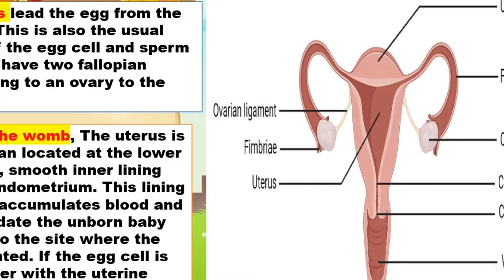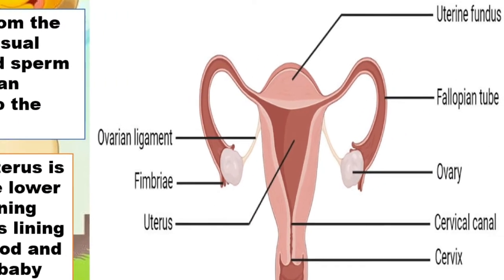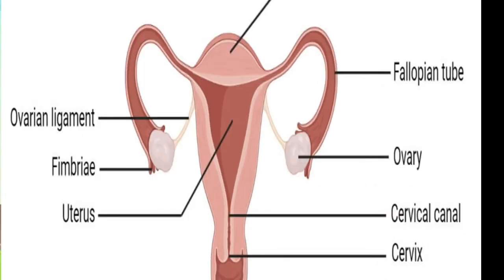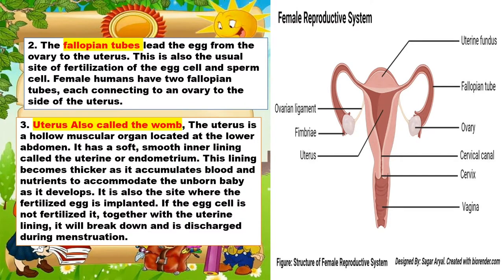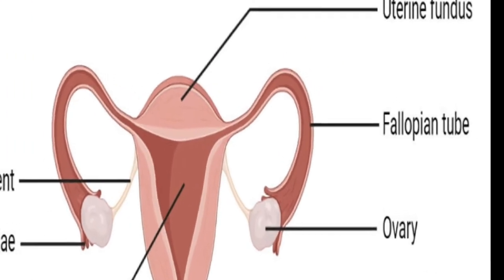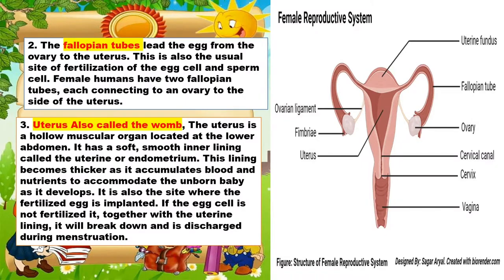The second one is the fallopian tubes. The fallopian tubes lead the egg from the ovary to the uterus. This is also the usual site of fertilization of the egg cell and sperm cell — meaning, this is where the meeting of the egg cell and sperm cell takes place. Female humans have two fallopian tubes, each connecting an ovary to the side of the uterus.